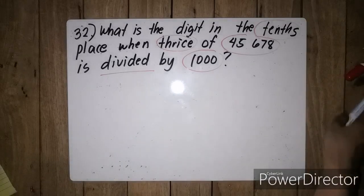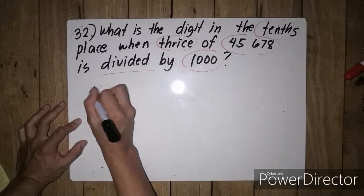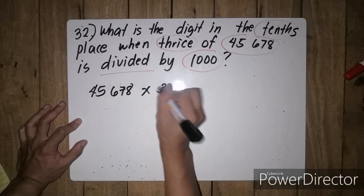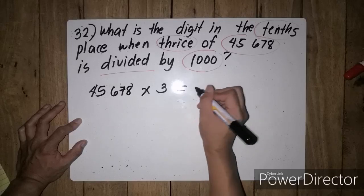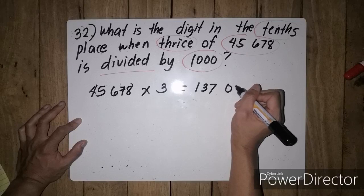All we have to do first is to find the thrice of 45,678. So we have 45,678 times 3. The answer is 137,034.